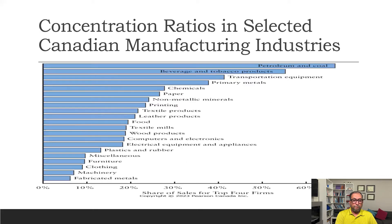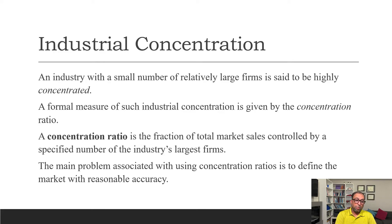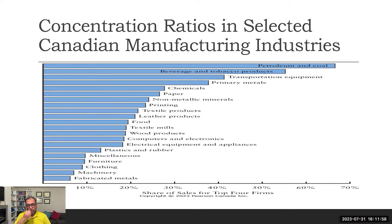The main problem with concentration ratios is how you define the market. For example, in the pharmaceutical industry there are many variations — life-saving drugs versus cosmetic or entertainment drugs — so we have to differentiate when defining the market. Looking at Canadian manufacturing data, the petroleum and coal industry is highly concentrated at about 70 percent owned by just four firms, followed by beverage and tobacco, transportation equipment, and primary metals, while clothing and machinery have very low concentration ratios.